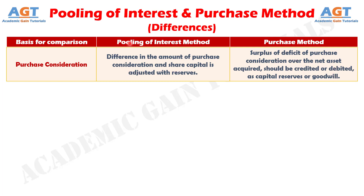Pooling of interest and purchase method are the two important accounting techniques used in the mergers and acquisitions of companies. They mainly differ in terms of the value that the combined balance sheet of the company places on the assets of the transferor company. These are the differences between pooling of interest method and purchase method.